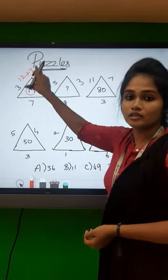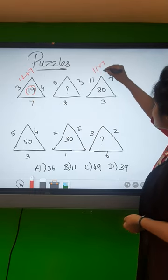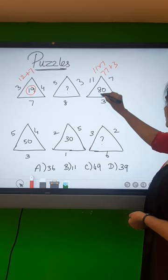This technique is to work out. First, check. Eleven into seven is like seventy-seven, plus three is like eighty.